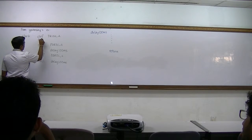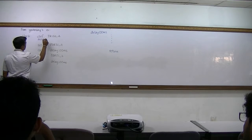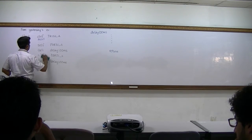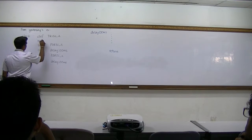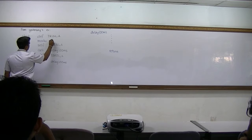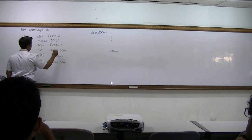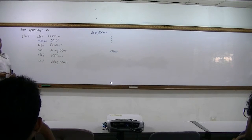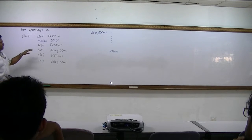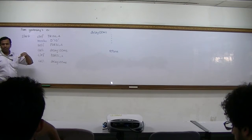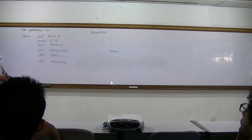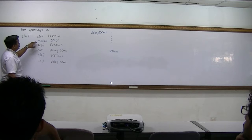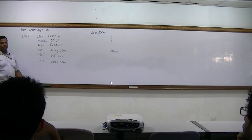So what we can do is, in this example, I'm going to use the working register as my loop counter. That's the reason I want to show this. I'm going to use my working register as my loop counter. So if I move ten to the working register, what should I do here?